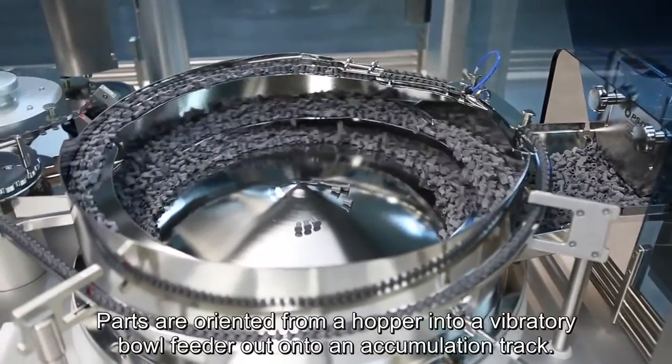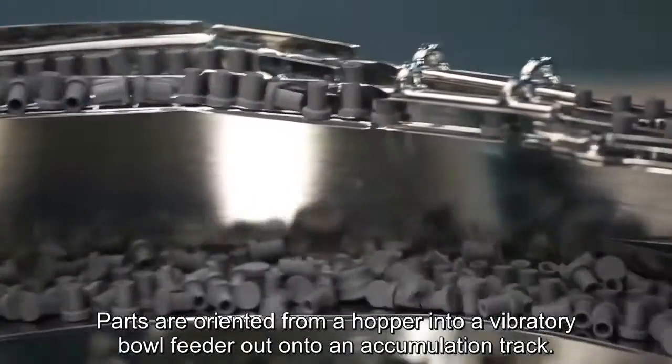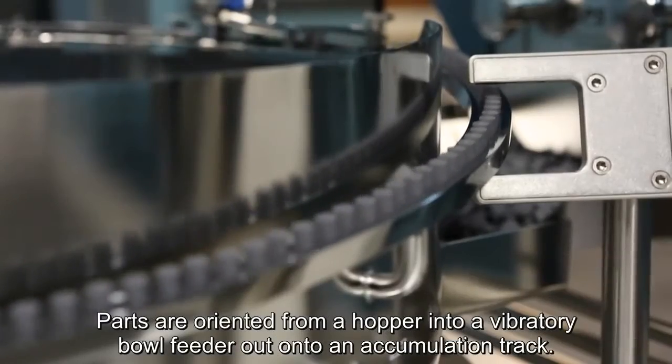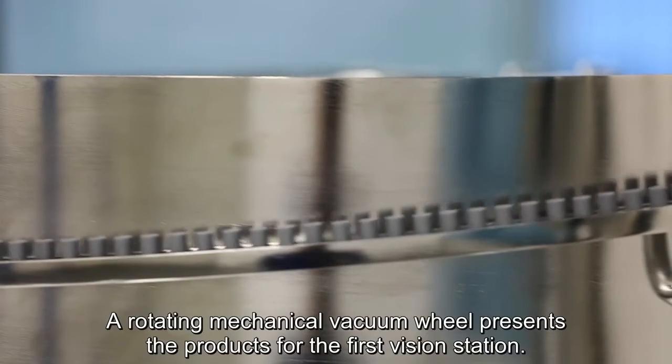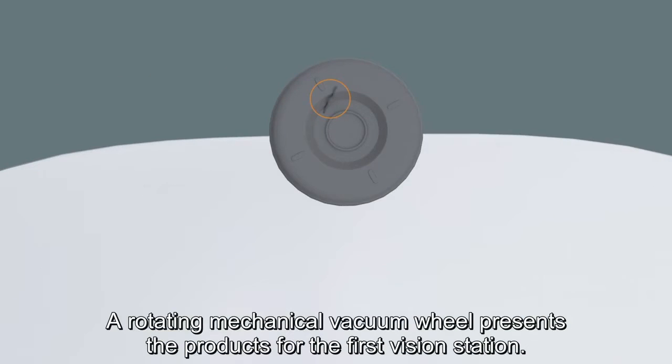Parts are oriented from a hopper into a vibratory bowl feeder out onto an accumulation track. A rotating mechanical vacuum wheel presents the products for the first vision station.